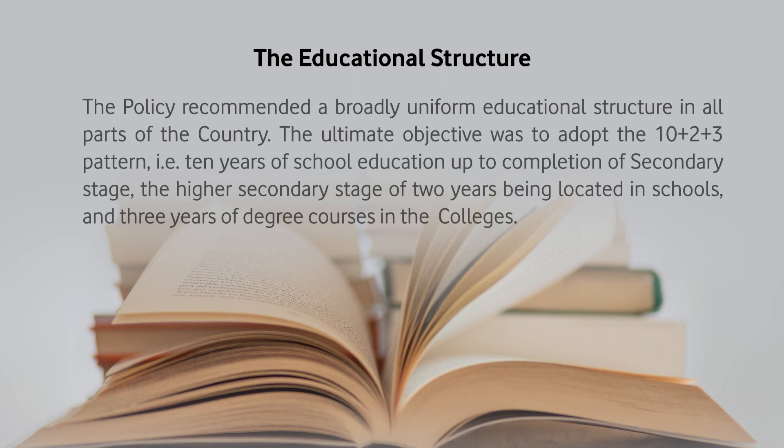Regarding education structure, the policy recommended a broadly uniform educational structure in all parts of the country. The ultimate objective was to adopt the 10+2+3 pattern — that is, 10 years of school education up to completion of secondary stage, 2 years of higher secondary stage located in schools, and 3 years of degree courses in colleges.